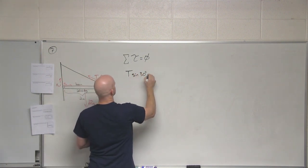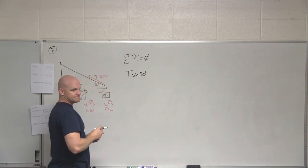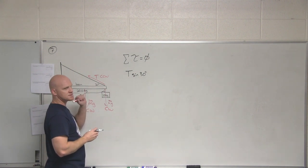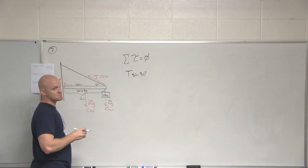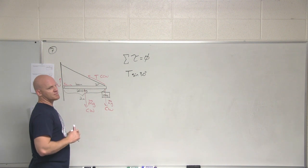Awesome, so I'll make counterclockwise positive again. So in this case then, awesome, T sine 30. Where'd you get times two from? Is the cable attached to the boom twice? So it's not a pulley system here or anything like that, so it's just T sine 30.